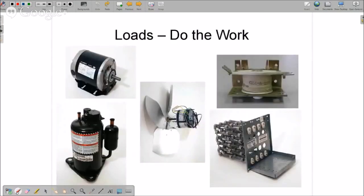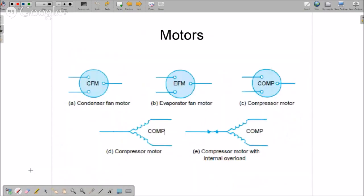Here, here, and here are our motors, and here's some schematic symbols that you might see. This is a condenser fan motor with its wiring coming in and out. This is an evaporator fan motor or blower motor, and a compressor motor. You may also see it in other schematic diagrams looking like this or looking like this. Not to worry, I'll show you how you're going to identify those here in just a bit.